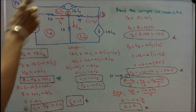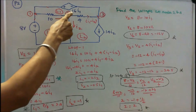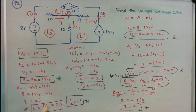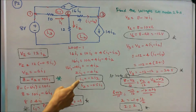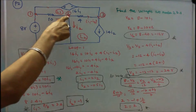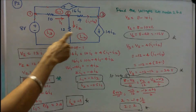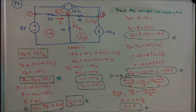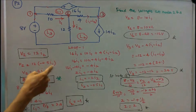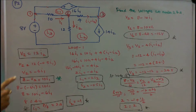First I consider loop 1 and write the loop equation: 16I1 is equal to 10I1 plus 4 into (I1 minus I2). I simplify: I1 is equal to minus 2I2, therefore I2 is equal to minus 0.5I1. Here V2 is equal to 12 into I2. Since I2 is equal to minus 0.5I1, V2 is equal to 12 into minus 0.5I1, that is equal to minus 6I1.